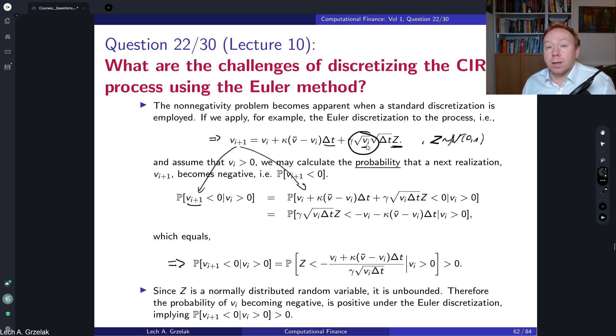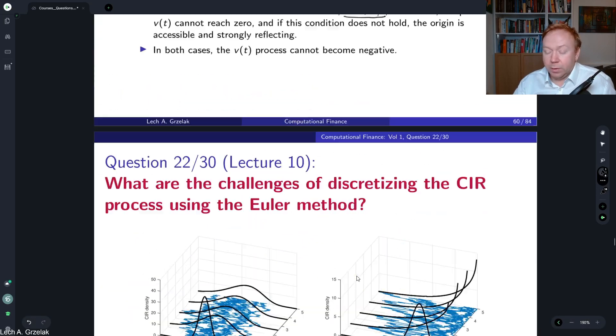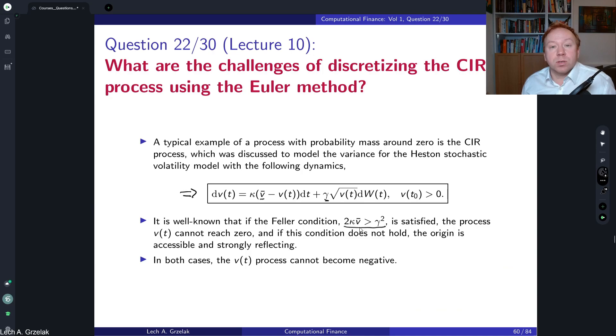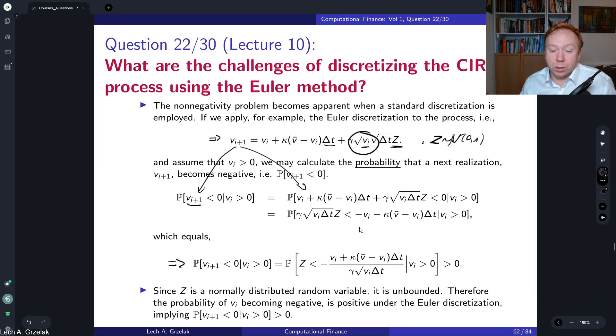This means that there is a chance that if we apply Euler discretization, in the next step the variance would become negative. If variance becomes negative, it's troublesome because we have the square root, so in the next time step we will plug in negative values under the square root sign. This means that your simulation would explode. This is the problem of Euler discretization of the CIR process: some of the realizations can become negative, and the probability of that increases once the Feller condition is less satisfied. The difference between the right hand side and left hand side becomes greater, the probability of negative realizations will be larger. I hope it explains and see you next time.